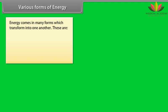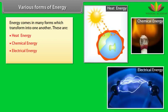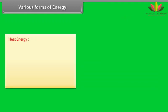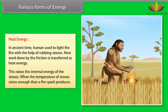Various forms of energy. Energy comes in many forms which transforms into one another. These are heat energy, chemical energy, electrical energy, nuclear energy. Heat energy. Let us take an example for better understanding. In ancient time, human used to light the fire with the help of rubbing stones. Here work done by the friction is transferred as heat energy. This raises the internal energy of the stones. When the temperature of stones raises enough, then a fire spark produces.